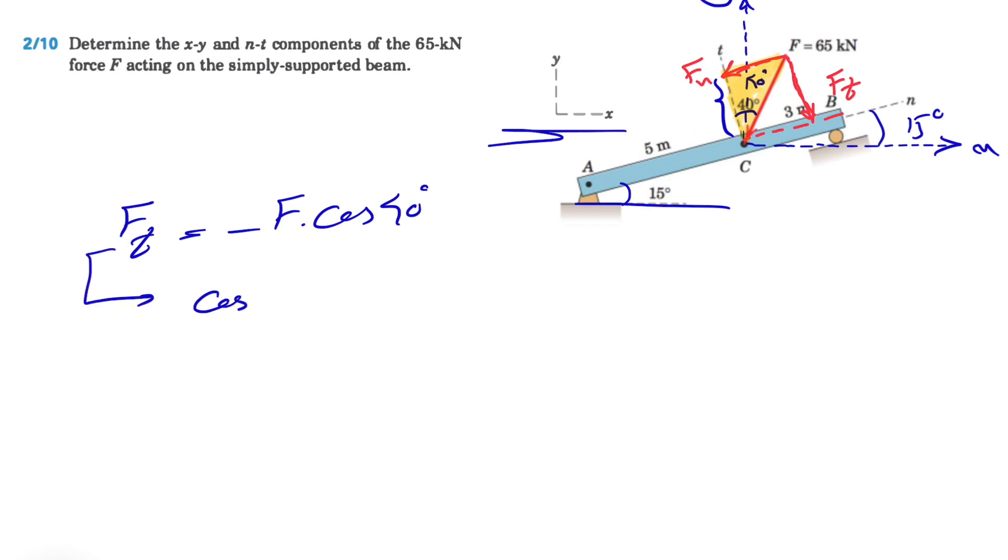It will be F times cosine of 40 degrees. This is also coming from, if you want to find the cosine of 40 degrees, we will have adjacent which is the Ft divided by hypotenuse which is our F. So let's find our Ft. We know that the force F is 65 kilonewton, and if we find the cosine of 40 degrees we'll get minus 49.8 kilonewton.